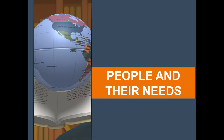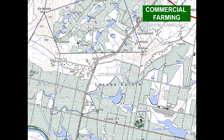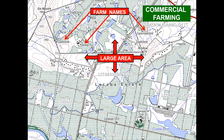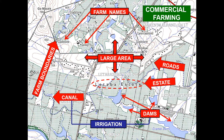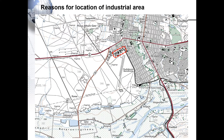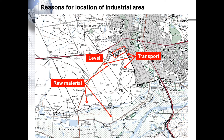Is this area commercial farming or not — and how will you know? It is a large area on the map, most of the farms have names, we can see the farm boundaries, we have roads for accessibility, it is an estate, and they have water by means of irrigation in dams and with a canal. The reasons for the location of an industrial area: level land, raw material with the diggings and agricultural area, transport, water availability, labour, and our market.